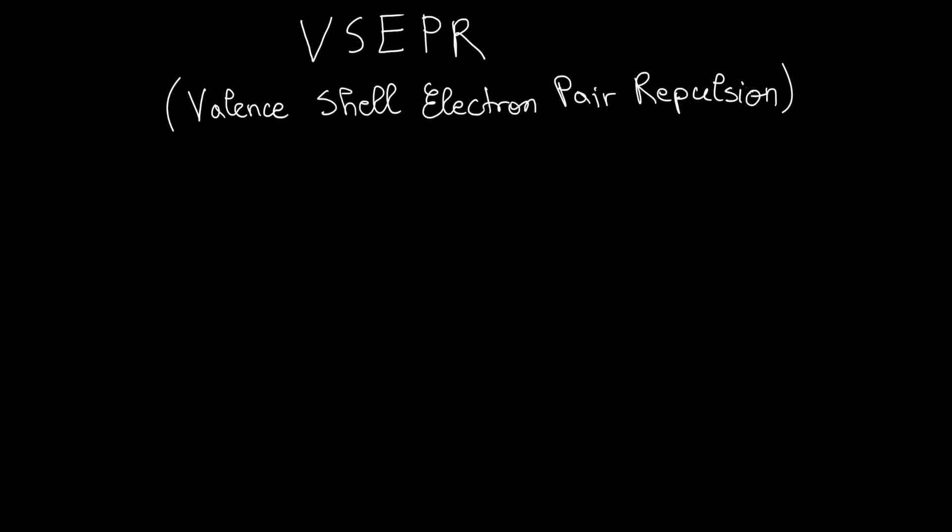In this video I'm going to talk about VSEPR theory. VSEPR stands for Valence-Shell-Electron-Pair Repulsion. It is based on Lewis structure and the principle that valence-electron pairs repel each other. The geometry around the central atom will be such as to minimize repulsion between electron pairs.